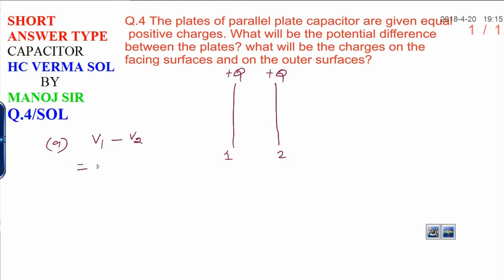This equals W/Q, work done upon positive charge, minus work done upon positive charge. Both will cancel out and finally the potential difference becomes zero. This is the answer to the first part.